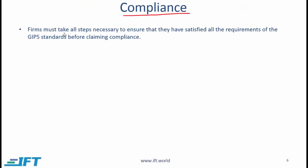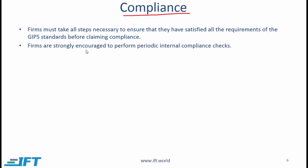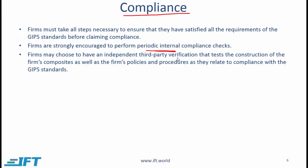Compliance. Firms must take all steps necessary to ensure they have satisfied all the requirements of the GIPS standards before claiming compliance. Firms are strongly encouraged to perform periodic internal compliance checks — once a firm has claimed compliance, it should keep doing these checks to ensure all provisions are still being followed. Firms may choose to have an independent third-party verification that tests the construction of the firm's composites as well as the firm's policies and procedures as they relate to compliance with the GIPS standards. Verification is recommended but voluntary, and if done, must be performed by an independent third party.